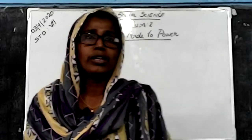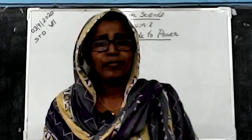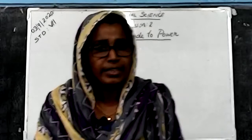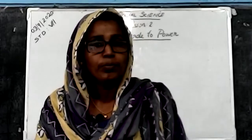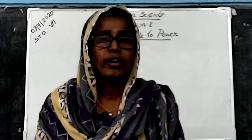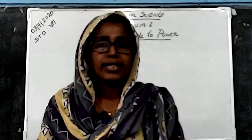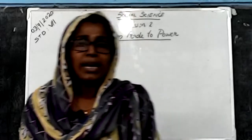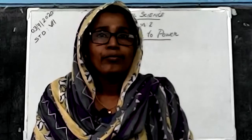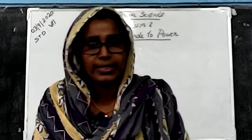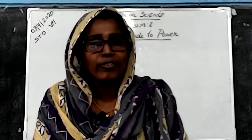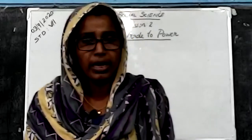Then we learned about the English East India Company. The East India Company was established in 1600. The East India Company defeated Sirajud Daula, the Nawab of Bengal, in the Battle of Plassey in 1757. Another battle was the Battle of Buxar in 1764.